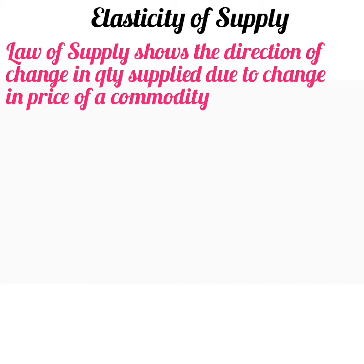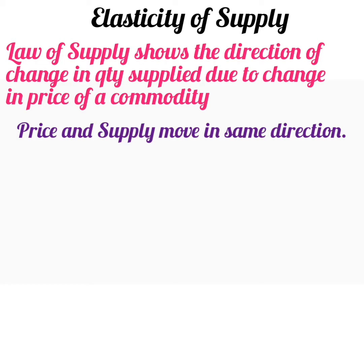Elasticity of supply. The law of supply shows you the direction of change in quantity supplied due to change in the price of a commodity. It states that both price as well as supply move in the same direction — that is, if price increases, supply increases, and if price decreases, supply decreases.